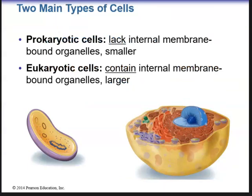We have two main cell types: prokaryotic cells and eukaryotic cells. Prokaryotic cells lack internal membrane-bound organelles and are much smaller compared to eukaryotic cells. Eukaryotic cells are essentially our animal cells — the cells that make us who we are. They do contain internal membrane-bound organelles and are larger. There are four common components between these two cell types according to your book.